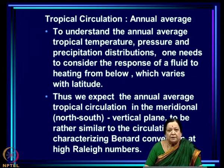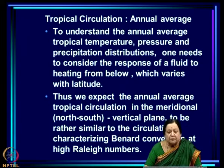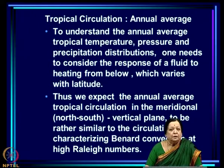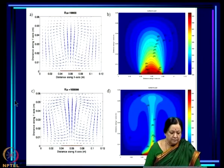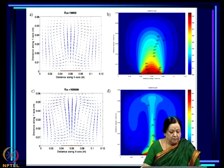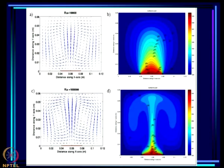To understand the annual average of tropical temperature, pressure, and precipitation distribution, one needs to consider the response of a fluid to heating from below which varies with latitude. We expect the annual average tropical circulation in the meridional — north-south and vertical — plane to be rather similar to Bénard convection. The Rayleigh number measures heating relative to viscous effects, and large Rayleigh numbers mean viscous effects are relatively less important.